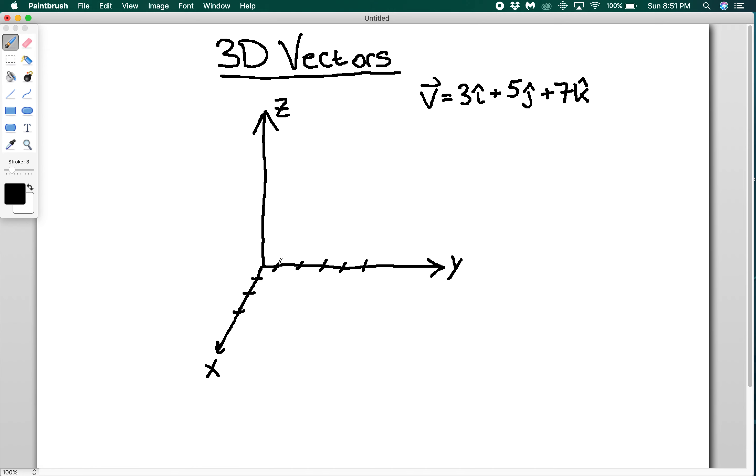And then z, z should be nice and parallel to the y, so we're going to have 7. 1, 2, ooh, that's a little close, I think. 2, 3, 4, 5, 6, 7.